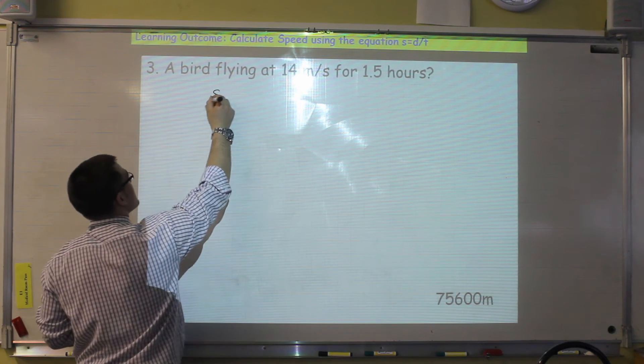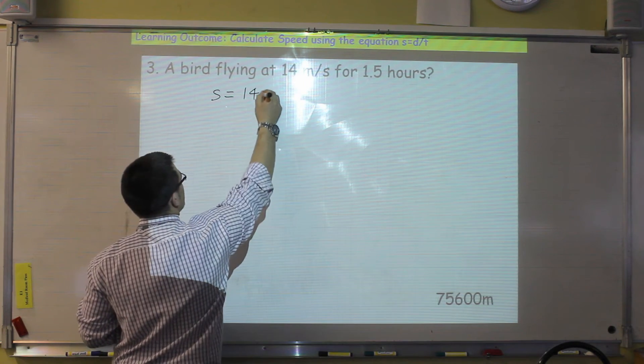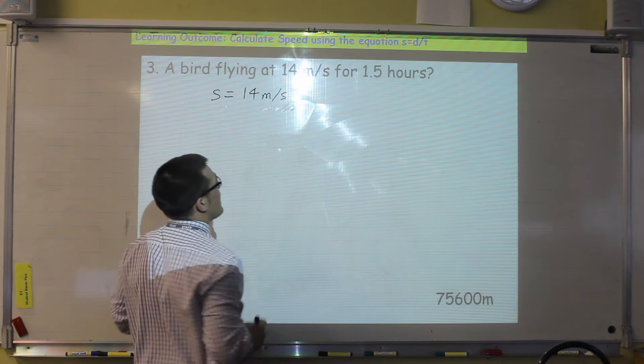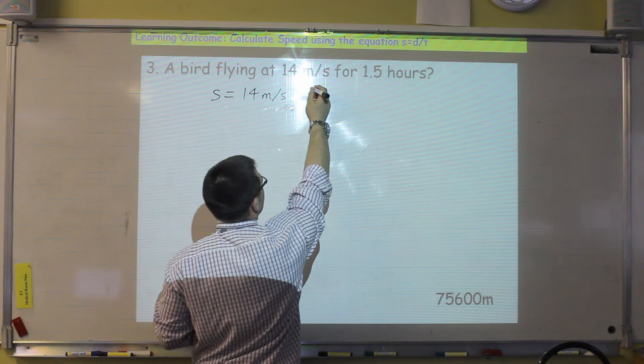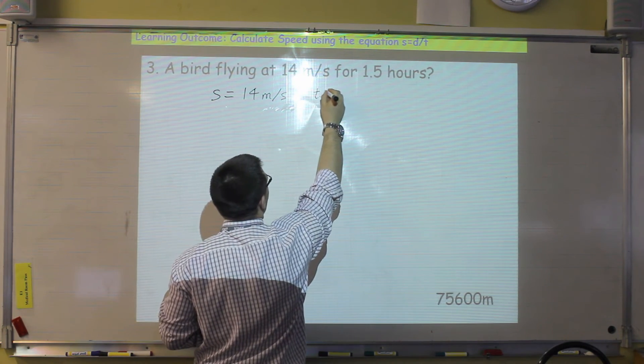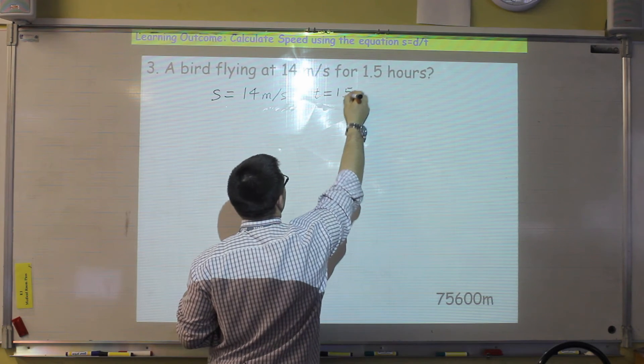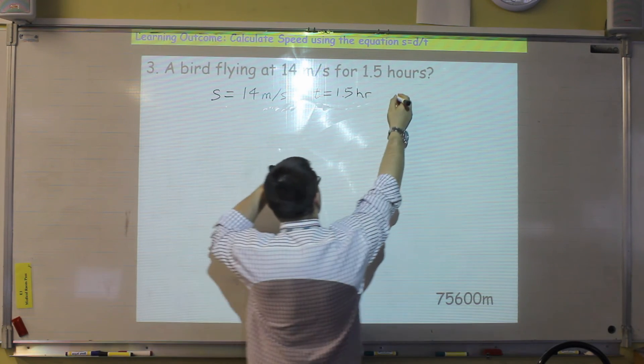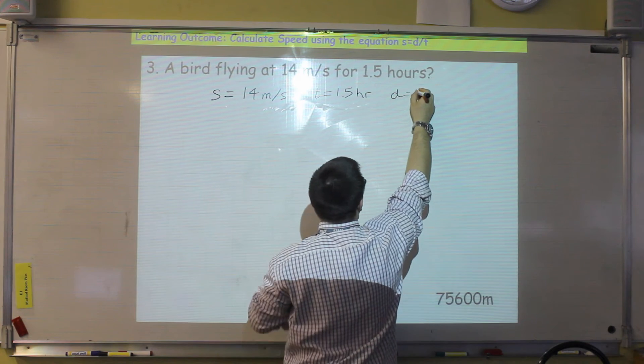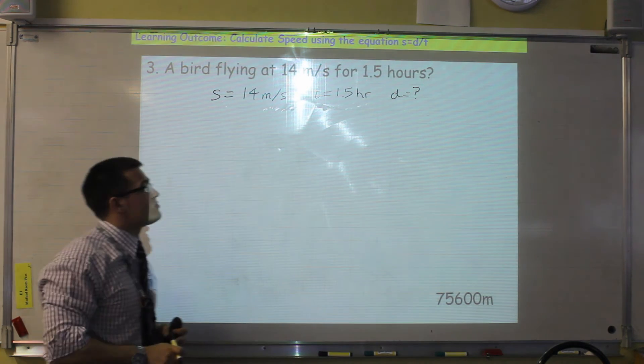So this time we have a bird, flying at fourteen meters per second. Meters per second is the unit for speed. So we've got a speed. So speed is fourteen meters per second. And it's flying for 1.5 hours. Hours is the unit of time. So we've got 1.5 hours. And in this question, we're going to calculate the distance that this bird has travelled.